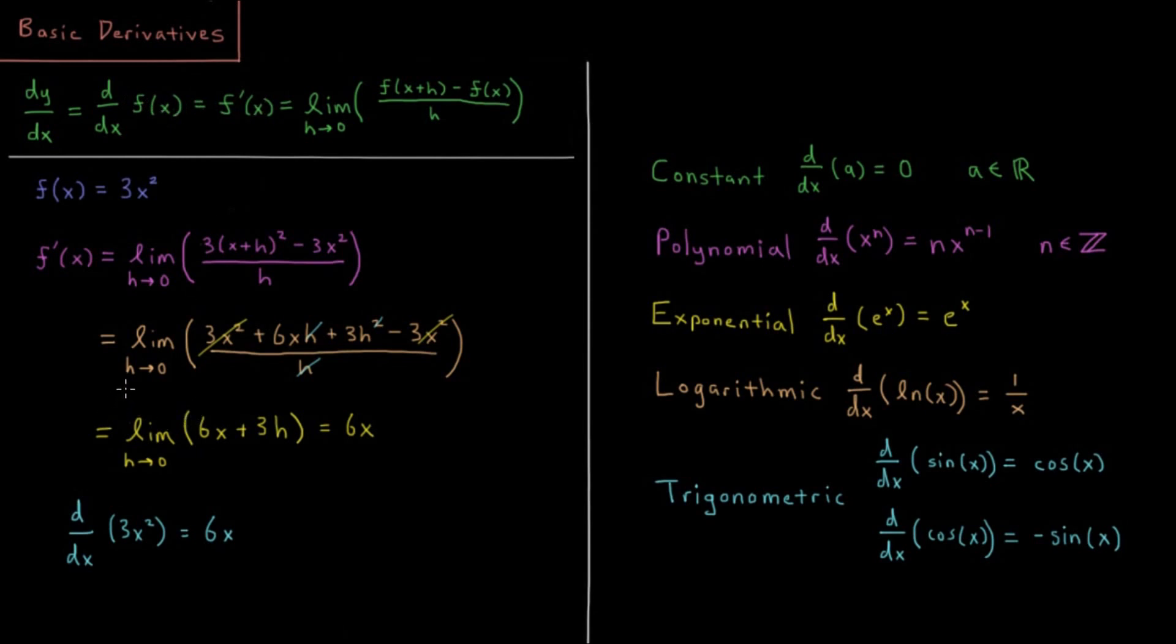So let's try to figure out what the derivative is for a pretty straightforward function here. We have f equals 3x squared. So what's f prime? What's the slope of this function at any given value of x?